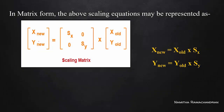We express this in matrix form. In translation, the operation is addition; in the case of scaling, it is multiplication. So we form the equation: X_new equals X_old multiplied by Sx along the x-direction, and Y_new equals Y_old multiplied by Sy along the y-direction.